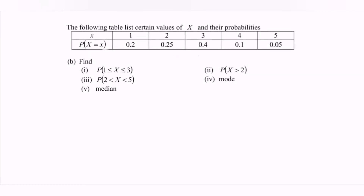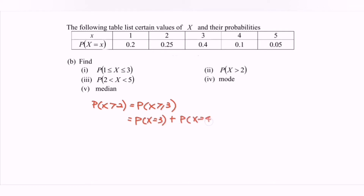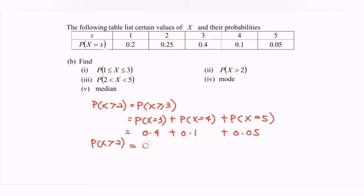For question 2, we find the probability that X is greater than 2. Remember, this is a discrete random variable, so we modify the inequality. It becomes the probability that X is greater than or equal to 3. By referring to the table, this equals P(X=3) plus P(X=4) plus P(X=5), which is 0.4 plus 0.1 plus 0.05. So the probability that X is greater than 2 is equal to 0.55.